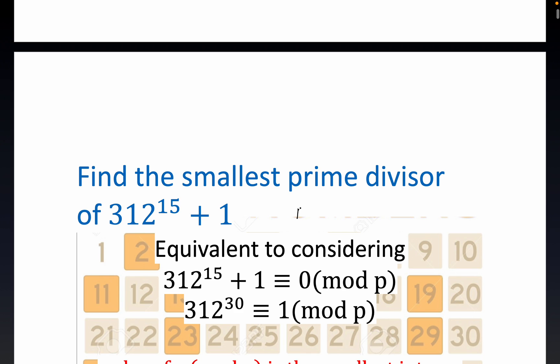A quick observation: the prime divisor is not 2. This is an even number plus one, which makes it an odd number, so an odd number can't be divisible by 2.